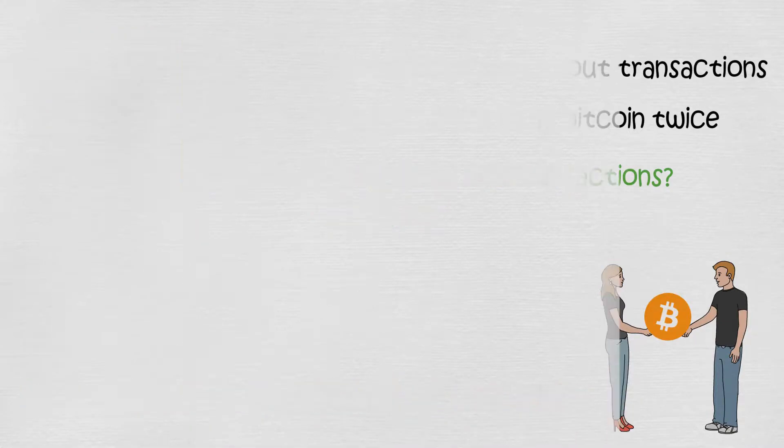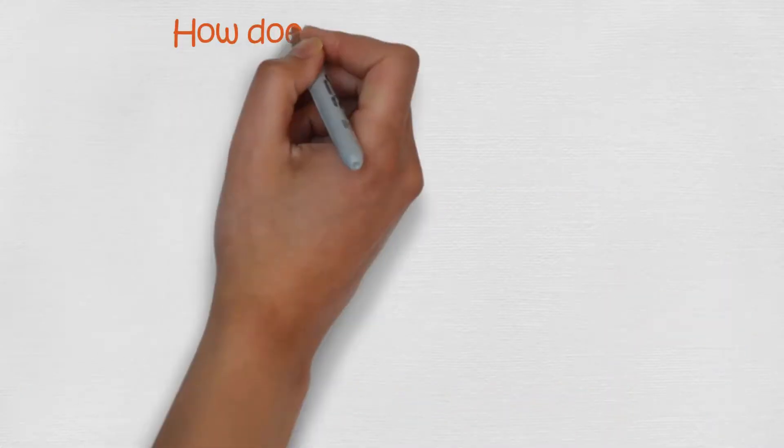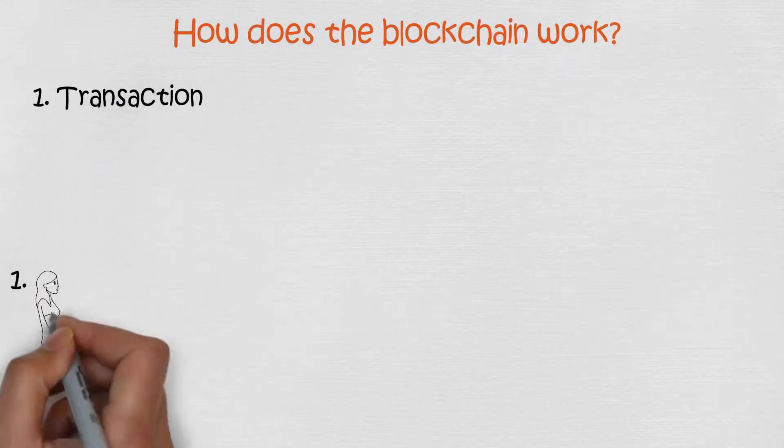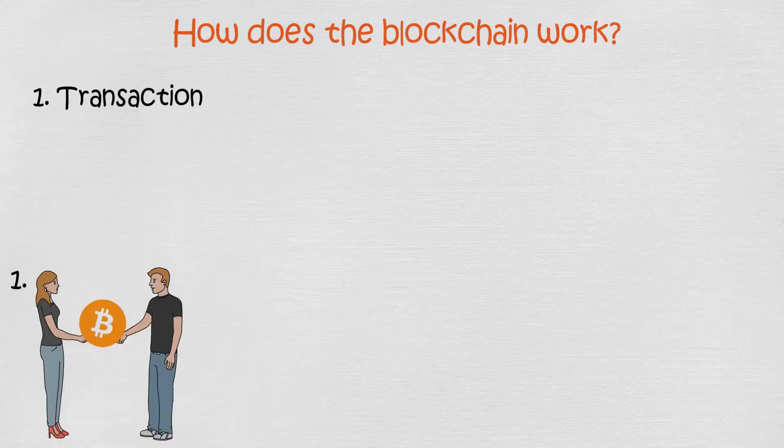So how does the blockchain work? As mentioned, blocks store information about transactions. So for a blockchain to work, we must have a transaction first, like spending Bitcoin for example.